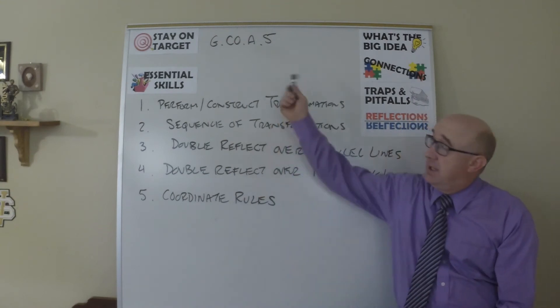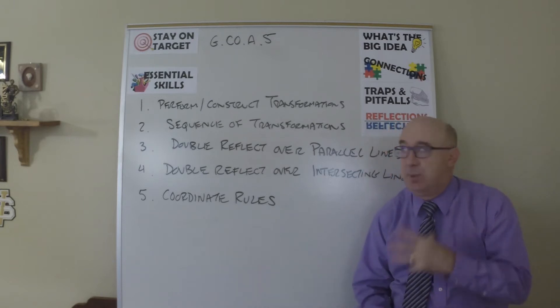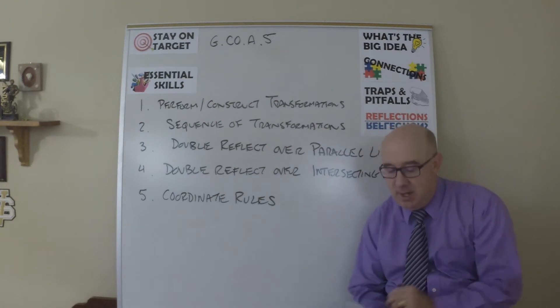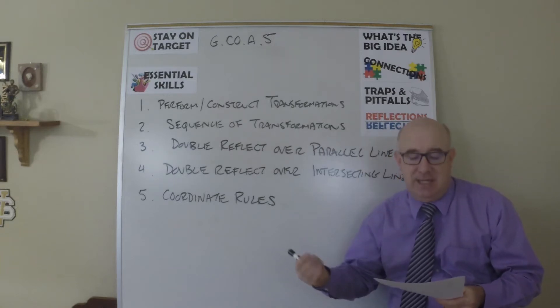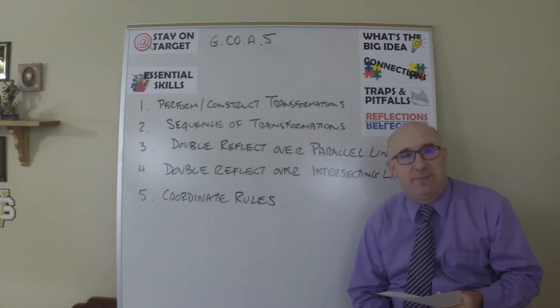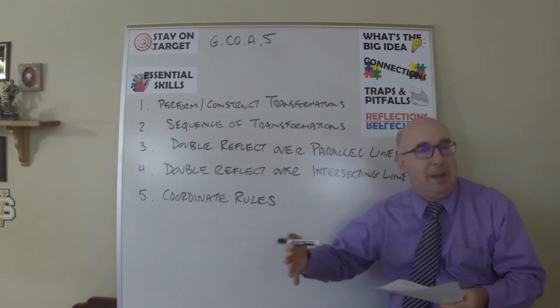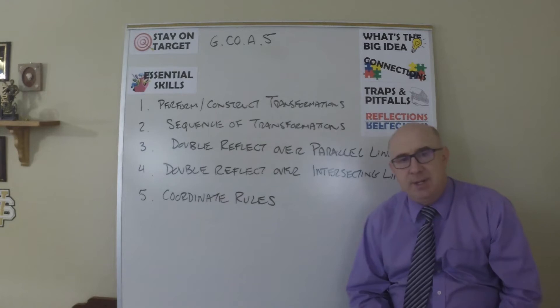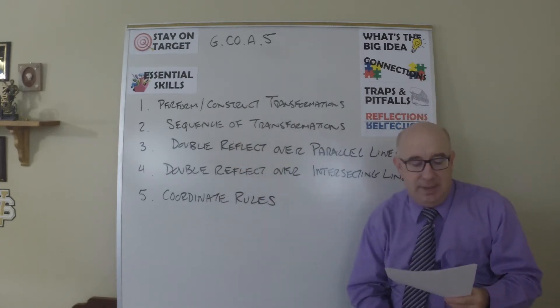All right, let's take a look at GCOA5. The last objective was all about definitions and rules. This one is all about doing the actual transformations. So it says, given a geometric figure, a rotation, a reflection, or a translation, draw the transformed figure using graph paper, patty paper, tracing paper, software. Specify a sequence of transformations that will carry a given figure onto another.